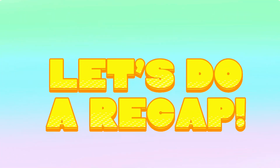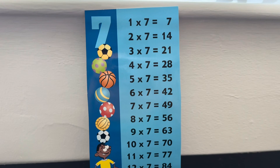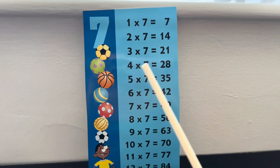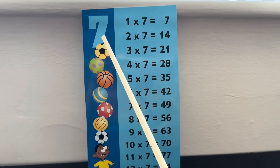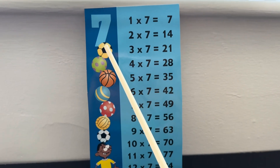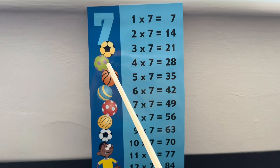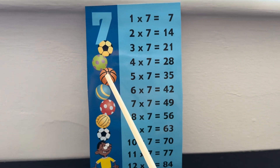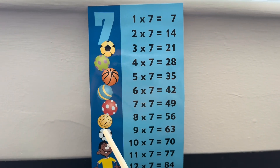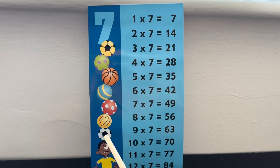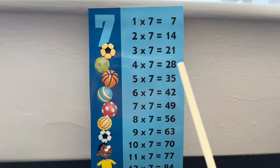Let's do a recap. Let's try to count how many balls are there. 1, 2, 3, 4, 5, 6, 7. The 7 times table.